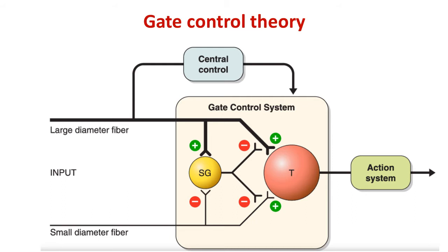The touch fiber gives collaterals to the pain afferent nerve pathway from the wound directly or via an interneuron, thereby inhibiting the transmission of pain. Presynaptic inhibition occurs by the touch fiber on the pain fibers, decreasing the pain sensation like a gate so no impulse can pass through the pain afferent fibers, resulting in analgesia — the gate is said to be closed.